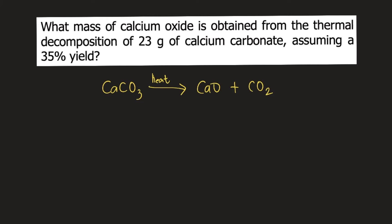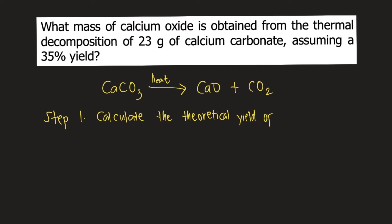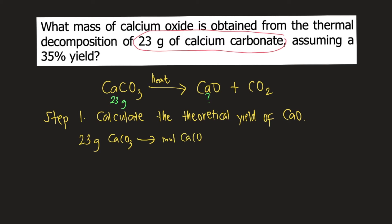So we can proceed to the calculations. Step one is to calculate the theoretical yield of calcium oxide. In the problem, we are given 23 grams of calcium carbonate. We will compute how much calcium oxide forms. We start with 23 grams of calcium carbonate, convert that into moles of calcium carbonate, from moles of calcium carbonate convert to moles of calcium oxide, and from moles of calcium oxide convert to grams of calcium oxide.